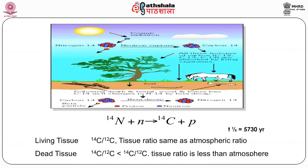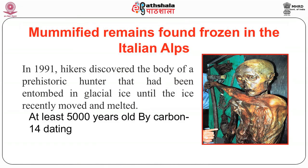Carbon dating: when a living tissue is alive, the carbon-14 to carbon-12 ratio is the same as the atmospheric ratio. If a change has taken place, you can determine when the tissue died. For example, a mummy found frozen in the Italian Alps in 1991 — by using carbon dating we can determine it is at least 5,000 years old.